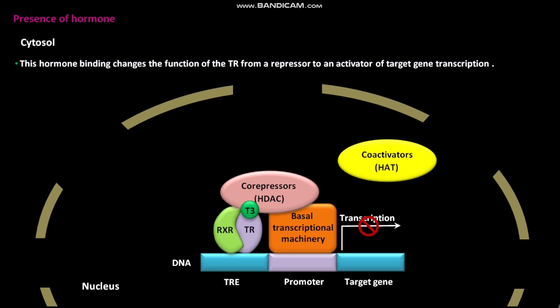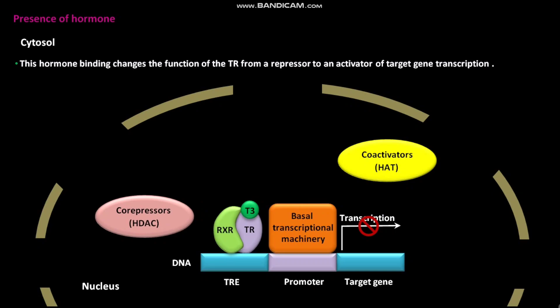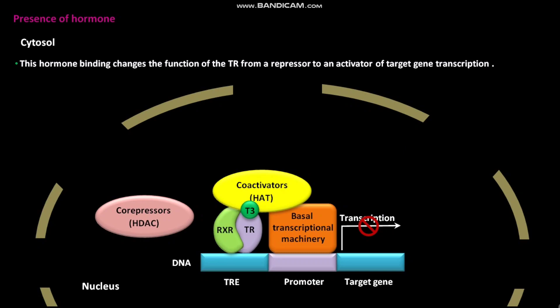This conformational change in TR leads to the release of co-repressors with HDAC activity and recruitment of co-activators with HAT activity, or histone acetyltransferase activity. This recruitment of co-activators with HAT activity relieves the transcription inhibition and leads to the activation of target gene transcription.